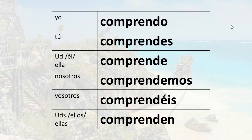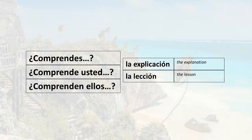You would say 'comprendo yo.' 'Tú comprendes' means 'you understand' — 'do you understand' becomes 'comprendes tú.' 'Usted comprende' means 'you understand' — 'comprende usted.' 'Ellos comprenden' means 'they understand' — 'do they understand' becomes 'comprenden ellos.' It's that simple.